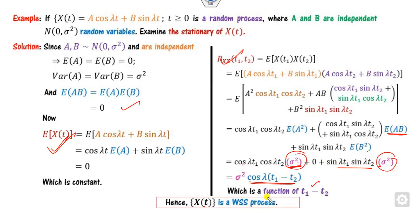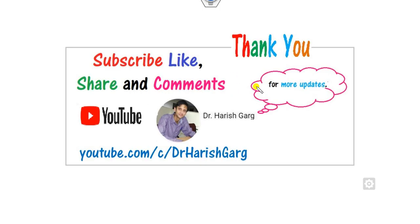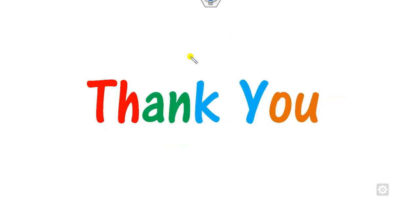So this is how you solve problems on the weak sense stationary process. Make sure you prove the two properties: constant mean and autocorrelation depending only on the time difference. In the next class we will see more properties of the weak sense stationary process. Please like, share and subscribe this video. Best of luck, students.